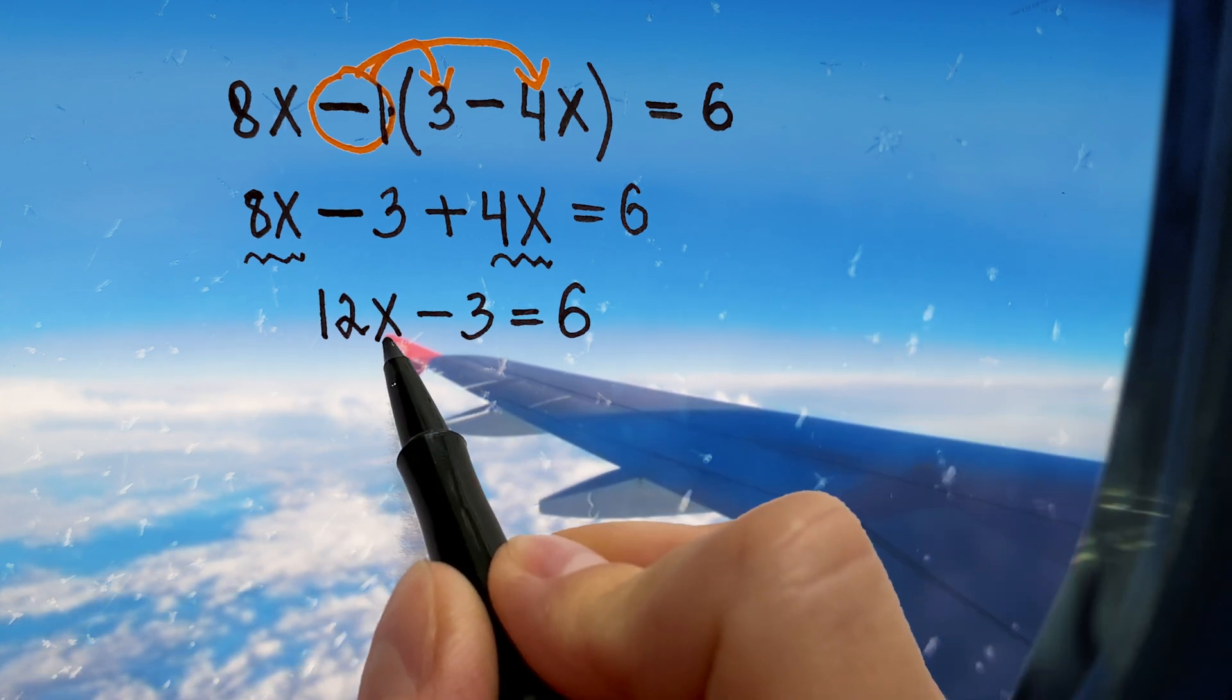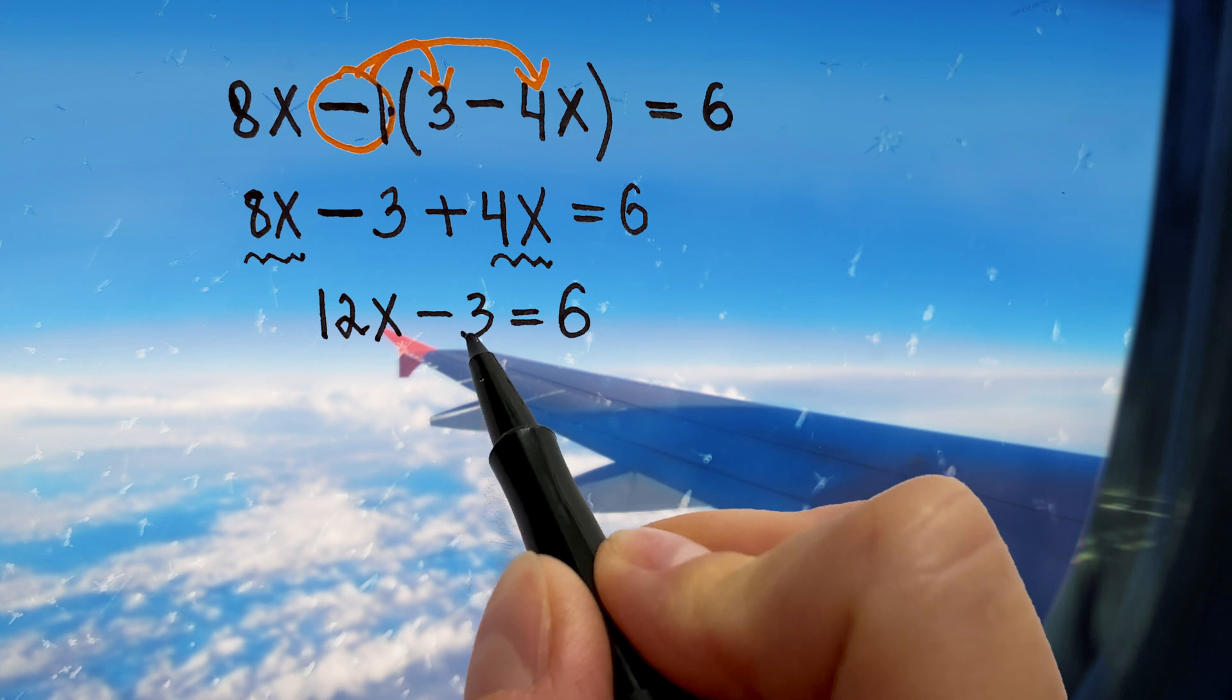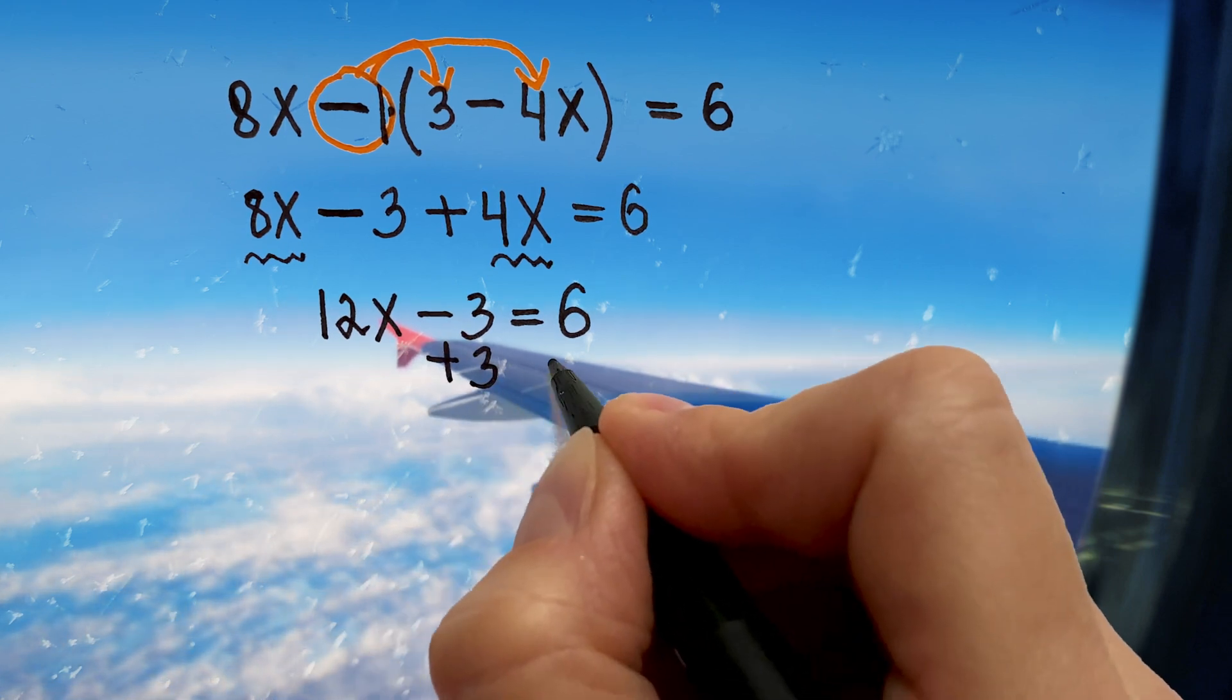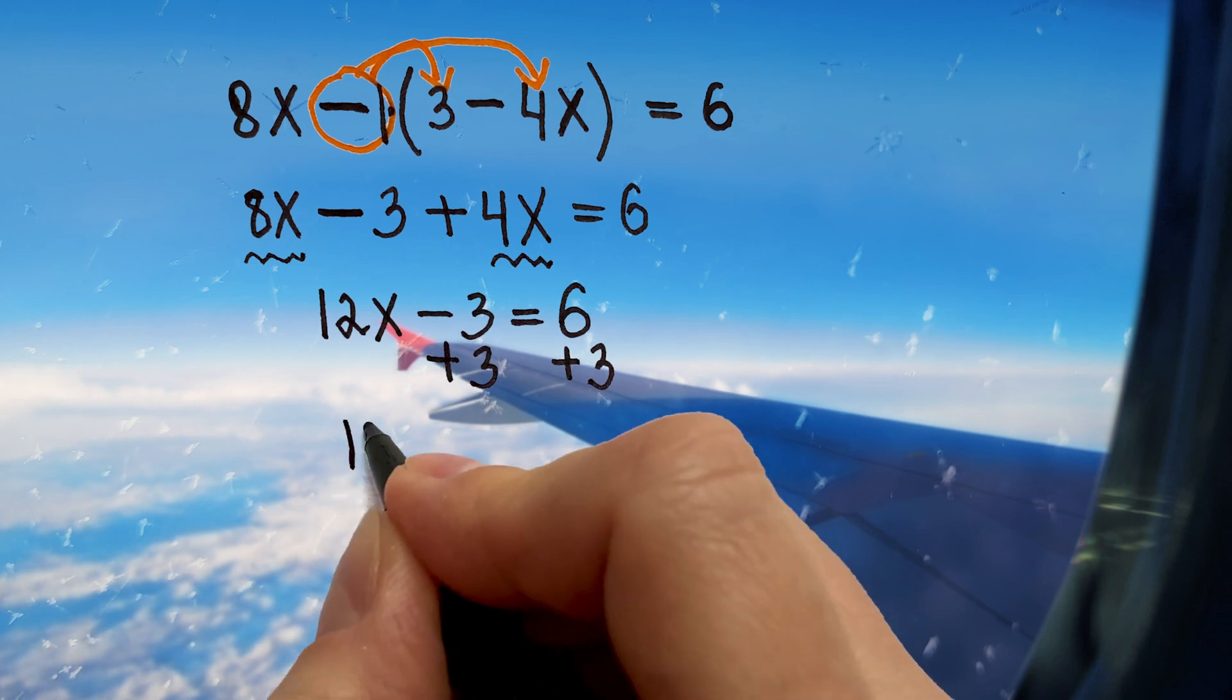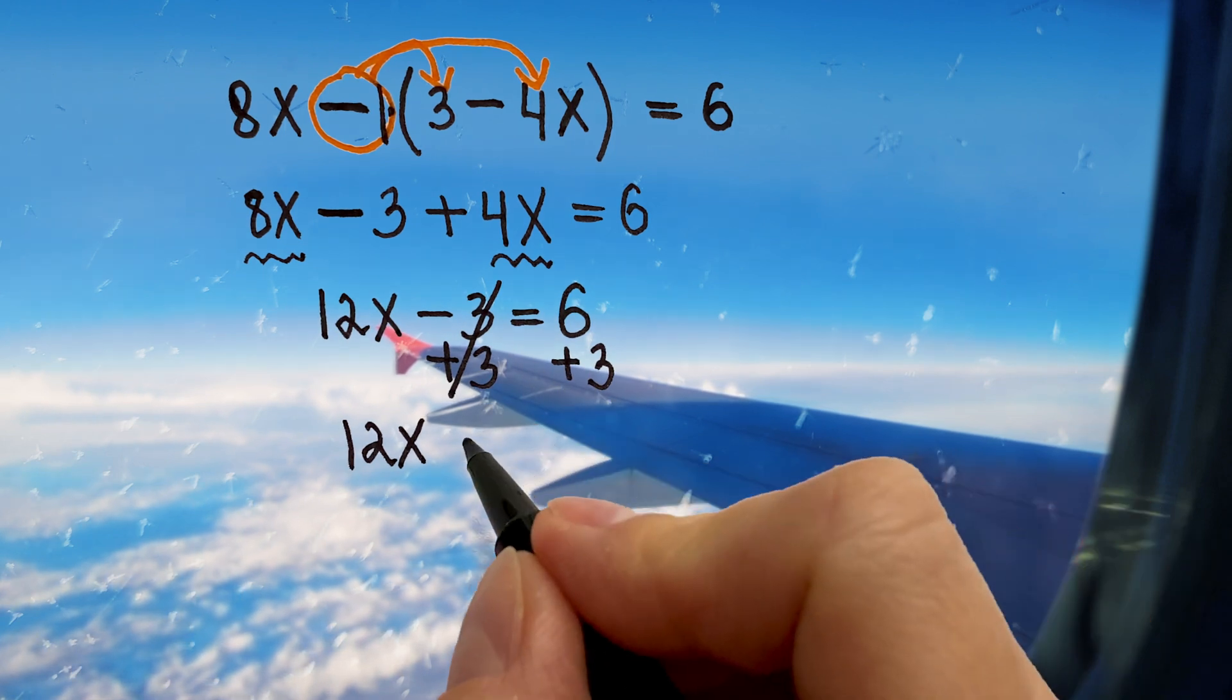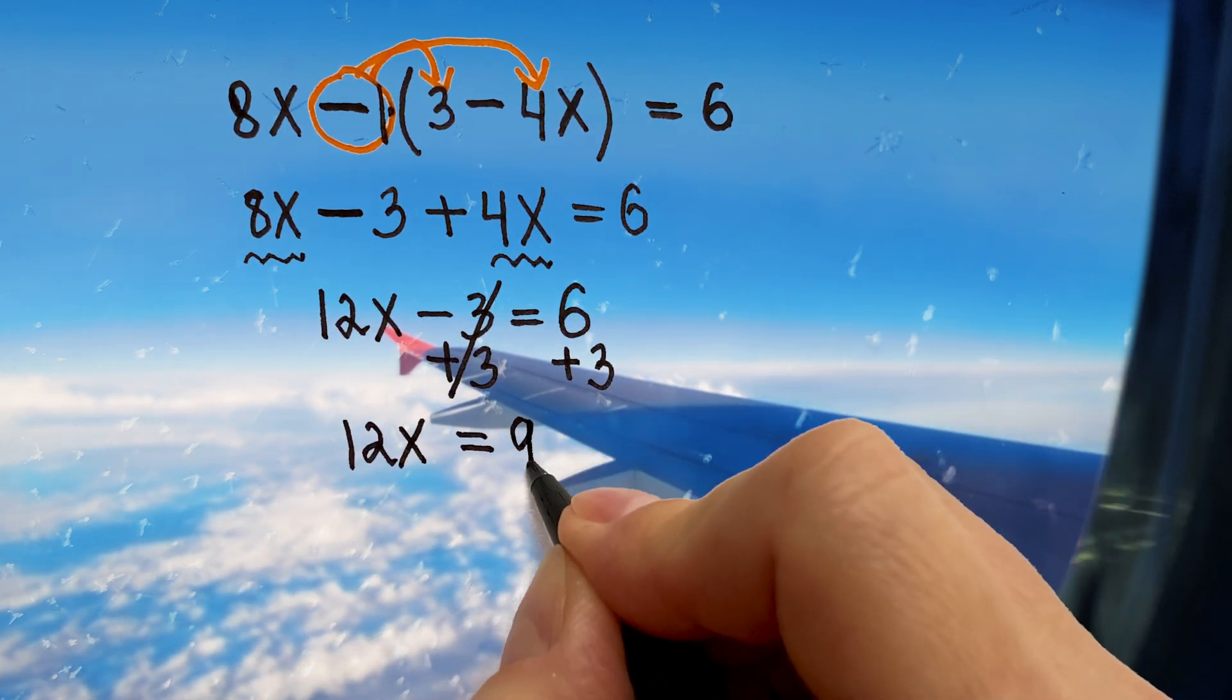We need to get x all by itself so we need to get rid of this 3. Here we are subtracting 3 so we will do the opposite. We will add 3 to both sides. We will have 12x and this 3 will be now gone because negative 3 plus 3 will give us 0. On the right we will have 6 plus 3 which is 9.